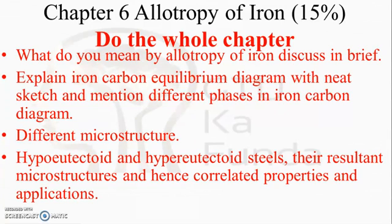Chapter 6 is Allotropy of Iron, which contains 15 percent of weightage. I have noted that you should do the whole chapter at least once because GTU may ask two questions for seven marks each, or one question for seven marks and another for three marks from this chapter. The whole chapter is important and going through it once will be very helpful for your examination as well as for future subjects.